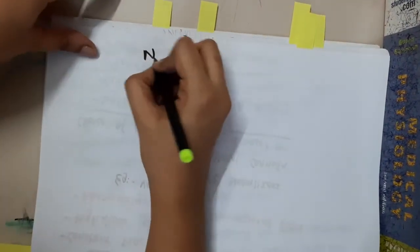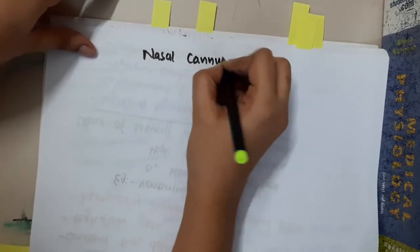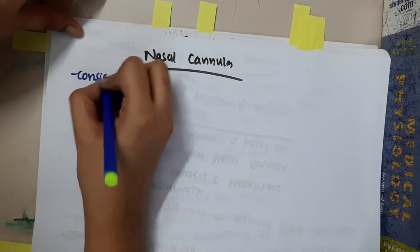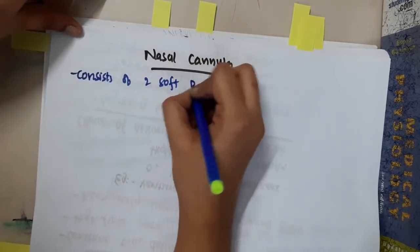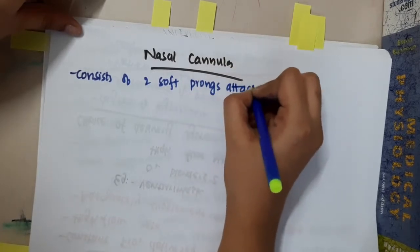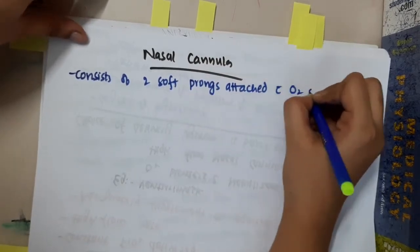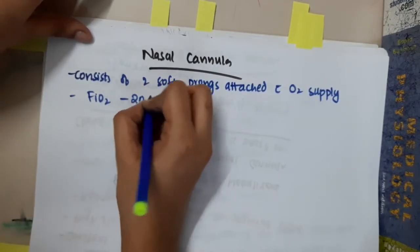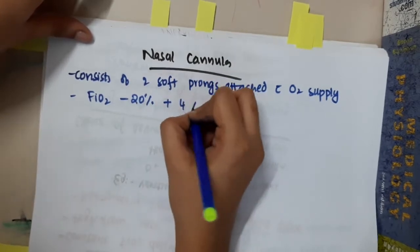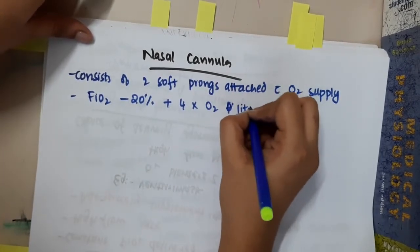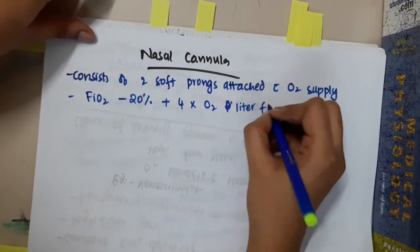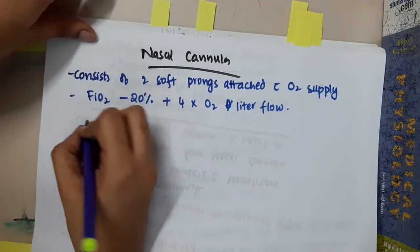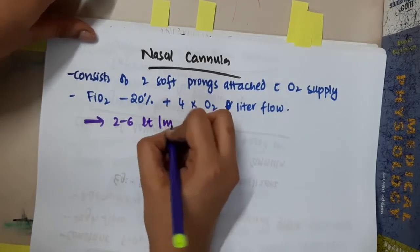The nasal cannula consists of two soft prongs attached to an oxygen supply. The FiO2 formula is: 20 plus 4 times the oxygen liter flow. The flow rate for a nasal cannula is around 2 to 6 liters per minute.